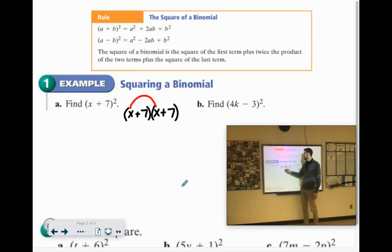X times X is X squared, X times 7 is 7X, inside 7 times X is 7X, and then the last, 7 times 7 would be 49.